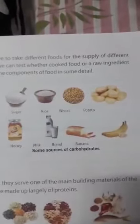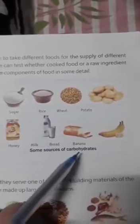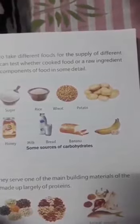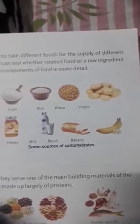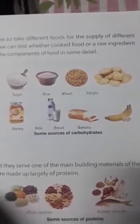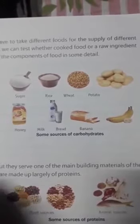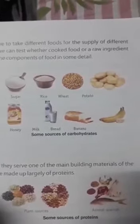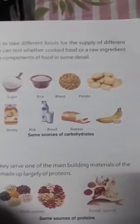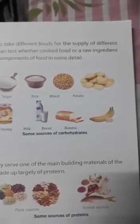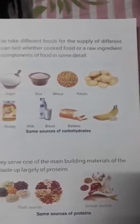Let us study the components of food in some detail. First, carbohydrates. Carbohydrates form the main bulk of the diet and are the chief source of energy. They include all sugars and starches. Sugars are found in candies, soft drinks, sweets, desserts and fruits. Sugars are of different types: lactose, glucose and fructose. Bread, breakfast cereals, potatoes and rice contain starch.